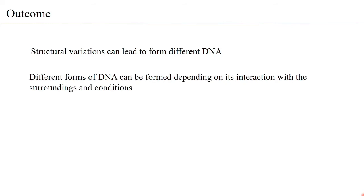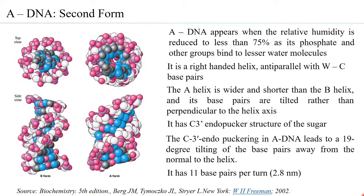Different forms of DNA can be formed depending on interaction with surroundings and conditions, and there is always a structure-function relationship. If DNA is in the B form, what makes it so and how does it function? If it is in another form, what is responsible for that conformation and what functionality is associated with it? We are already familiar with the B form — all postulates given by Watson and Crick pertain to the B form of DNA.